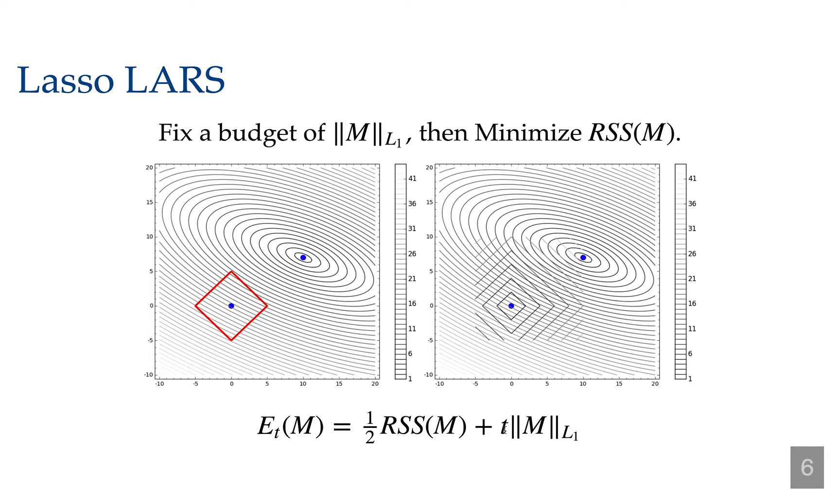And for each choice of parameter t, which is the relative importance of these two functions, you can find some sort of combined minimum, perhaps right there, depending on what t is.